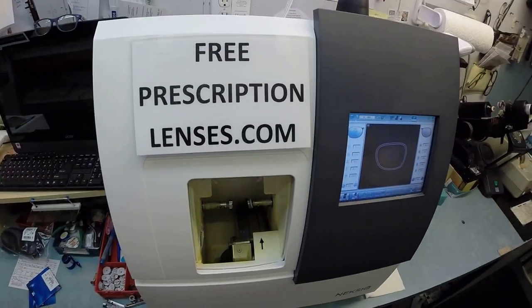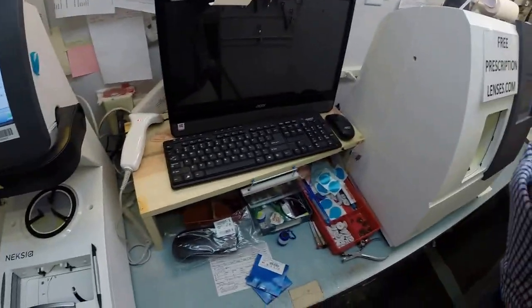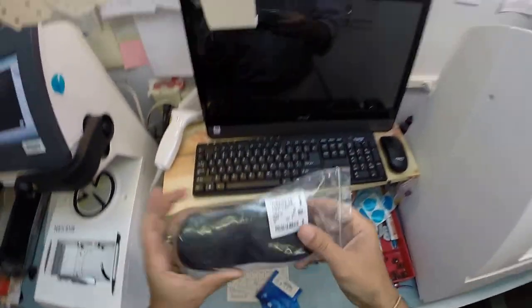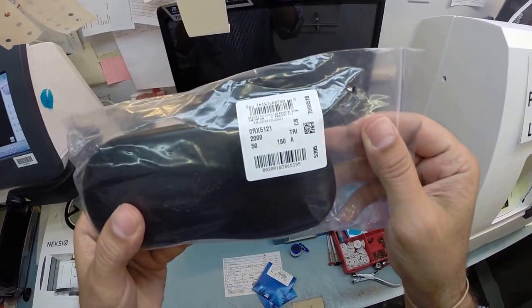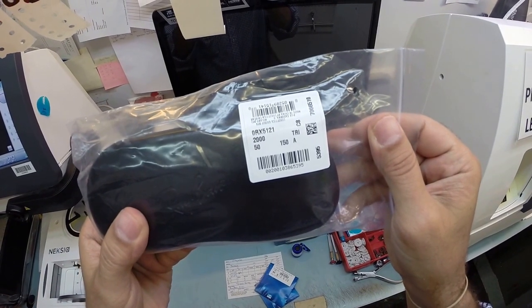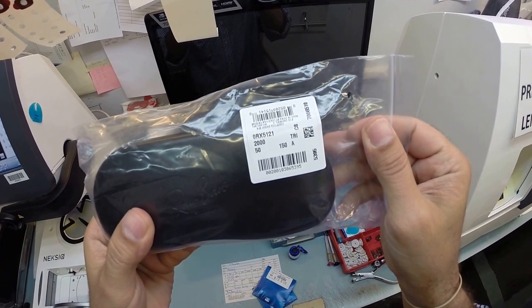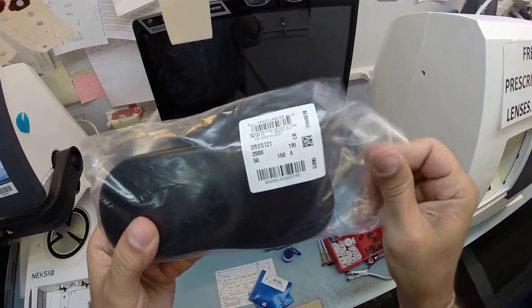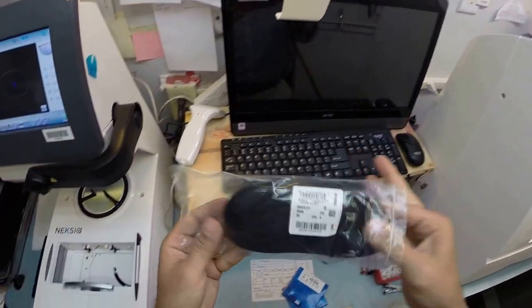Hello, Hola Olayinka in Phoenix, Arizona. Matthew here with FreePrescriptionLenses.com and with the help of my GoPro camera, I'm going to show you how I cut Transitions gray lenses for your Ray-Ban 5121 Wayfarer, color 2000, which is the classic shiny black in the 50 eye size.